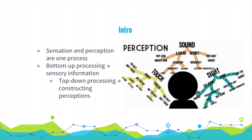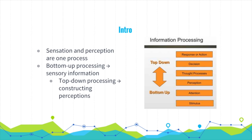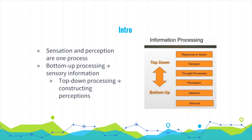Let's start off with the intro. Sensation and perception are one process — they're united. We also have two different types of processing. Bottom-up processing involves sensory information; it's analysis that begins with sensory receptors and works its way up to the brain's integration of sensory systems. Top-down processing involves constructing perceptions — information processing at higher levels of mental processes. Bottom-up is basic processing, while top-down moves to the more abstract, as showcased in this diagram.